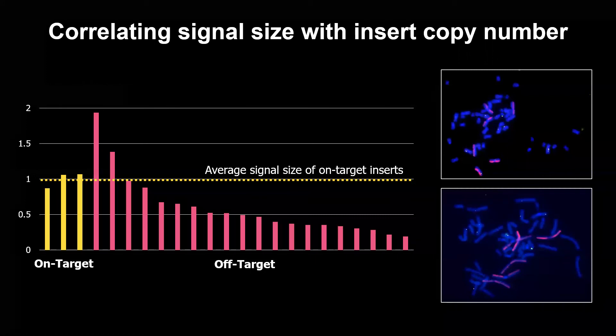One of the potential applications for Insight probes is to confirm copy number at each integration site. Our development of this capability is ongoing, but it appears from relative fluorescence that many of the off-target integrations observed in these edited iPSCs are partial transgenes. We are working out approaches to qualifying this assay as a means of determining copy number, and there will be more on that soon.